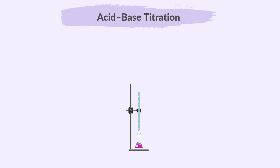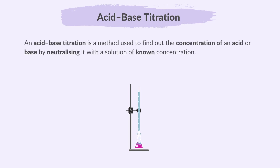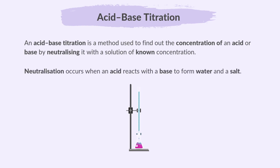Let's explore acid-base titrations. An acid-base titration is a method used to find out the concentration of an acid or a base by neutralizing it with a solution of known concentration. Remember, neutralization occurs when an acid reacts with a base to form water and a salt.